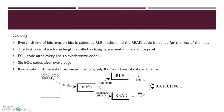Every kth line of information bits is coded by the RLE method and every other line by the read code. To ensure the start of the document is marked properly, it uses a white pixel. To synchronize every line, it will use an EOL or end of line. It will use six of them to conclude a page. Even if a corruption happens, it will only affect the K-1 scan lines. When it enters the buffer with this information, it will go to RLE or read and this is the result that it will generate.